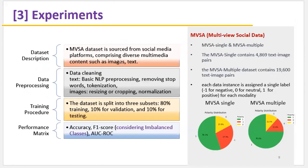To improve performance, we use public datasets. The dataset we use is called the MVSA dataset, which contains single and multiple subsets. Each subset has text and image pairs, making it ideal for sentiment analysis. Before training the model, some pre-processing is required — NLP for text and normalization for images. The dataset is split into three subsets: 80% for training, 10% for validation, and 10% for testing. Performance was evaluated using traditional metrics such as accuracy, F1 score, and AUC-ROC.